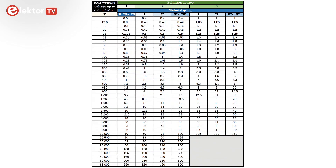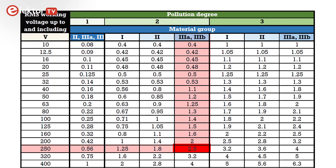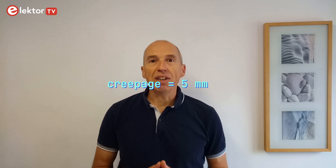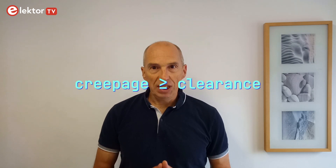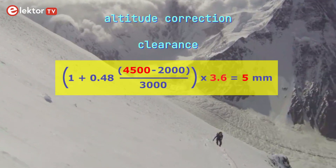In my draft standard the creepage distance between the primary and secondary circuits is obtained from Table 17. We find 2.5 mm, but this is for basic and supplementary insulation only. Since reinforced insulation comprises both, this value must be doubled and we get 5 mm. Note that this value also works for materials in the 3B group. The creepage distance is always larger than or equal to the clearance distance. If you stick to 5 mm for creepage, then the clearance distance will be 5 mm too instead of 3.6 mm, and you are good for altitudes up to 4500 meters.